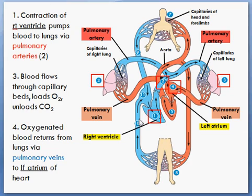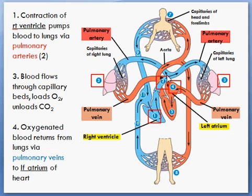Let's start right here where my mouse is — number one, the right ventricle. Deoxygenated blood enters the right side of the heart through the right atrium and goes into the right ventricle. Through the right ventricle, blood is pumped out to the pulmonary arteries, which is number two. The pulmonary arteries carry deoxygenated blood to the lungs.